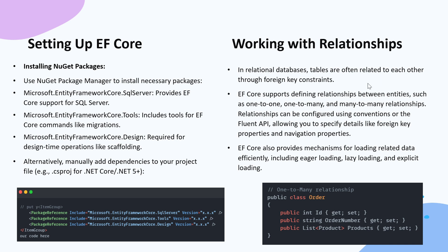In relational databases, tables are often related to each other through foreign key constraints. EF Core supports defining relationships between entities such as one-to-one, one-to-many, and many-to-many relationships. Relationships can be configured using conventions or the Fluent API, allowing you to specify details like foreign key properties and navigation properties. EF Core also provides a mechanism for loading related data efficiently, including eager loading, lazy loading, and explicit loading.